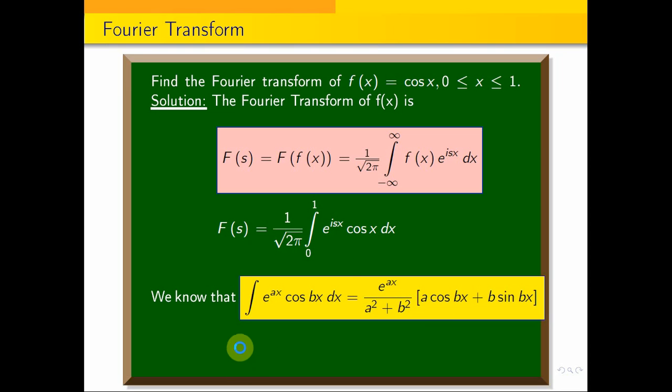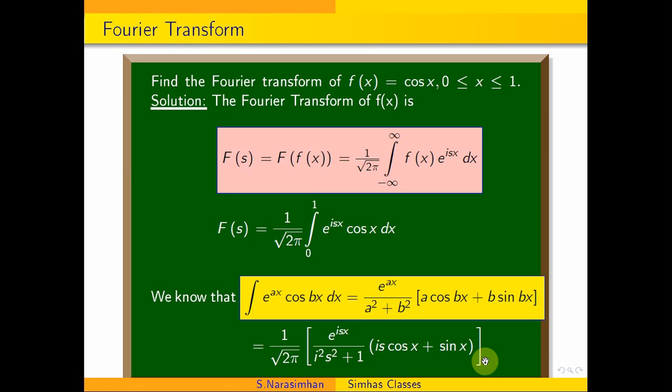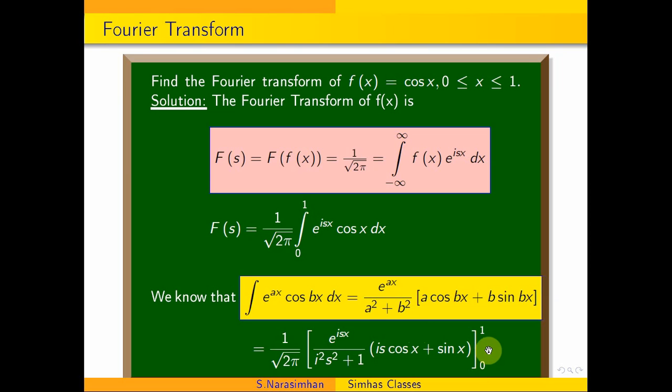This is equal to 1/√(2π), e^(isx) over, a² is i²s² plus b is 1, so i²s² plus 1, into a which is is times cos x plus sin x, evaluated from 0 to 1.